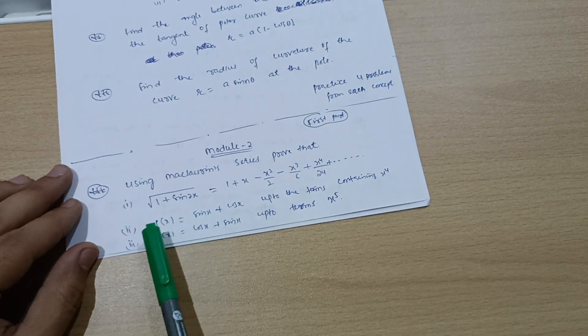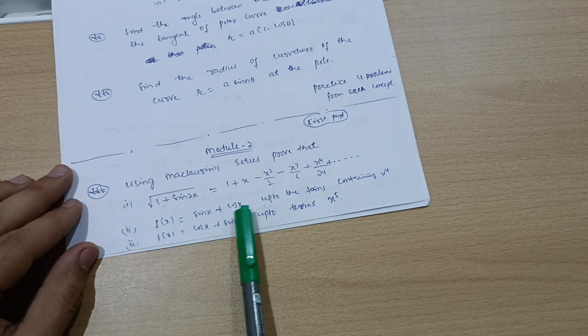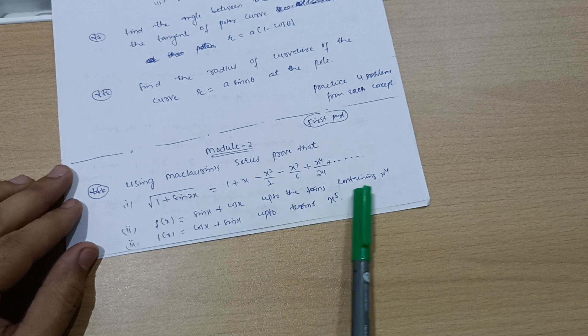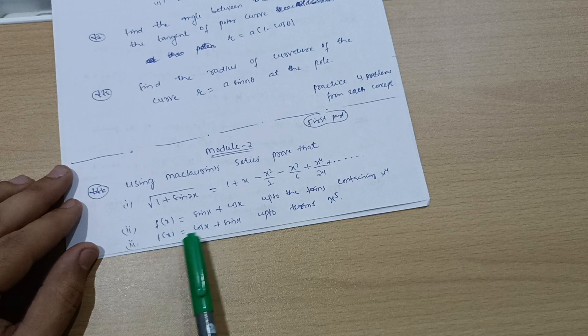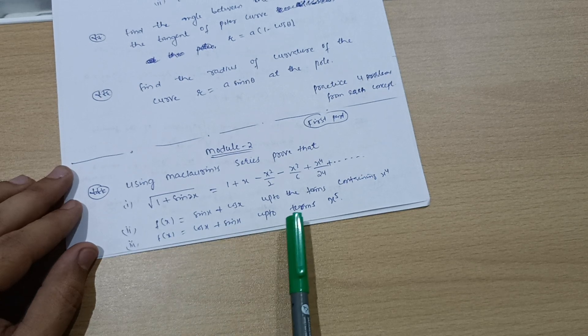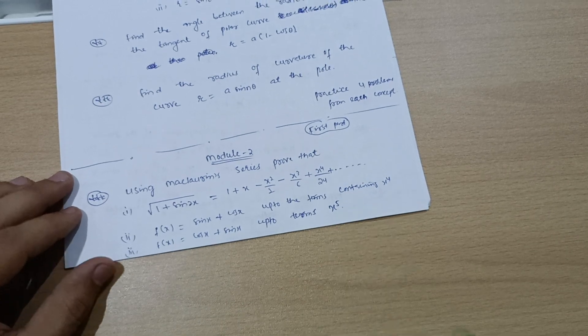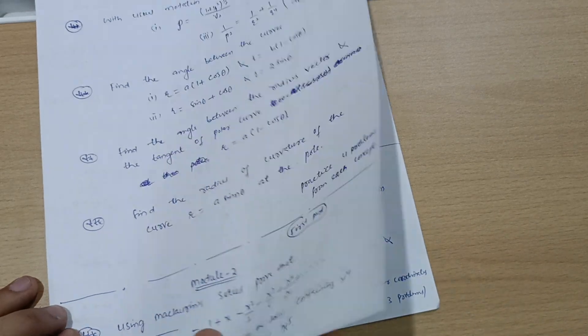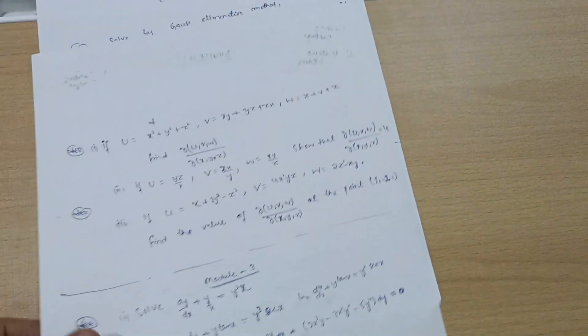Suppose they will give using Maclaren's series f of x equals sine x plus cos x, you have to extend it up to terms containing x to the power 4. Or f of x equals cos x plus sine x up to terms x to the power 5. This is Maclaren's series.